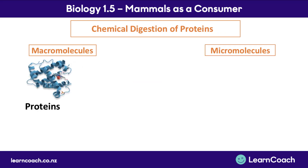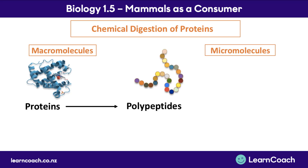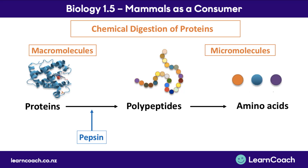Proteins are the second food group requiring chemical digestion. The first reaction is the breakdown of proteins into polypeptide chains — smaller chunks of protein — caused by the enzyme pepsin. The second reaction breaks those polypeptide chains into even smaller chunks called amino acids, which are small enough to be absorbed across the gut. This reaction is caused by the enzyme trypsin.